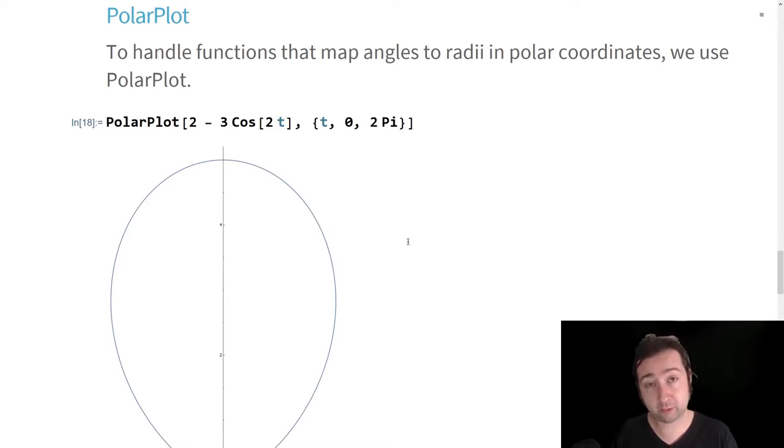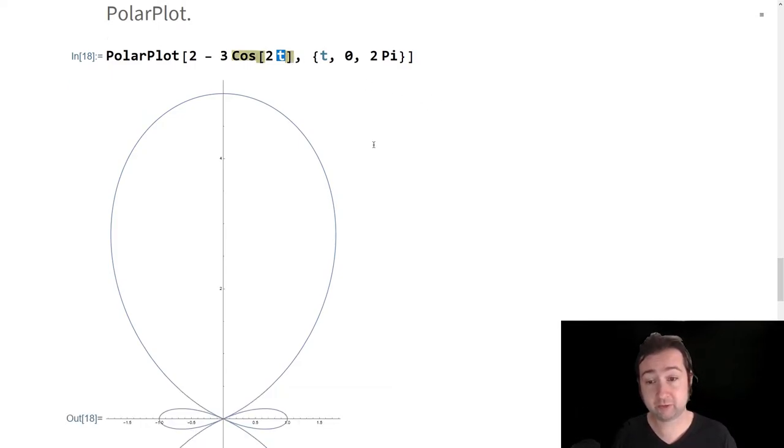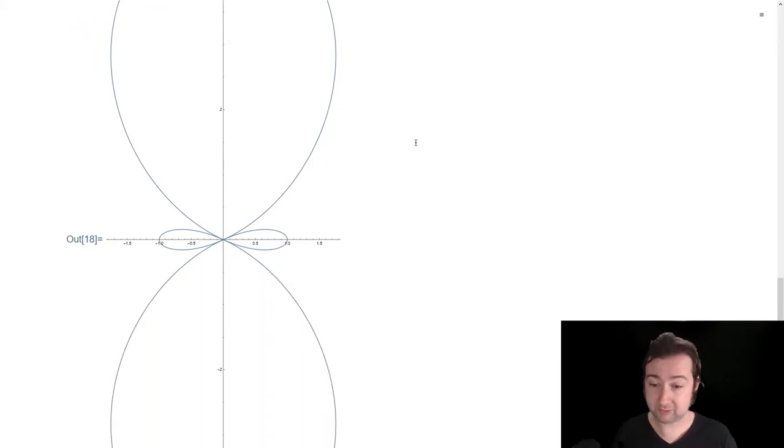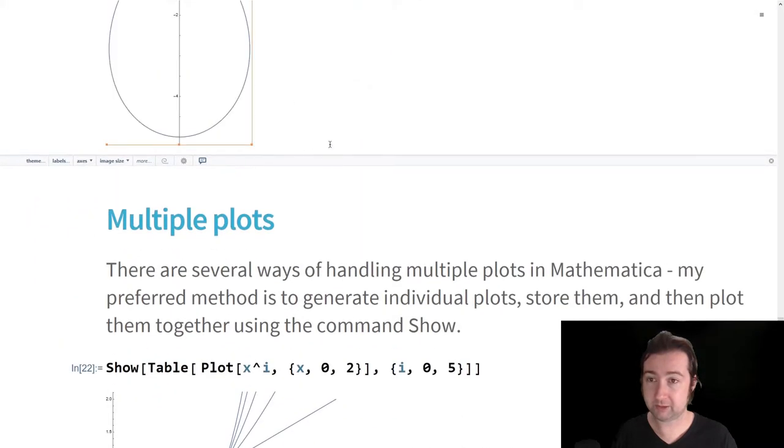If you want to impose polar coordinates onto an equation, you use polar plot. When you do that, the input variable, no matter what you call it is going to be interpreted as an angle. Here's the polar plot of two minus three cosine two t, it's kind of a cool shape, because you get this hourglass figure.